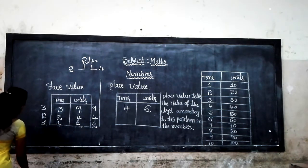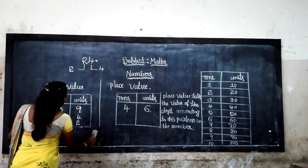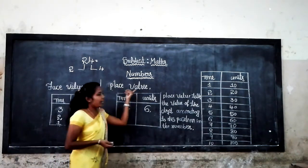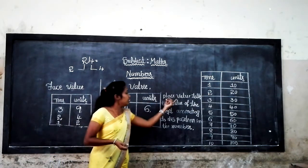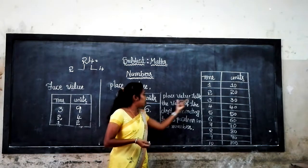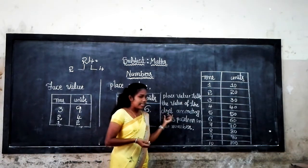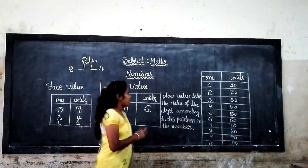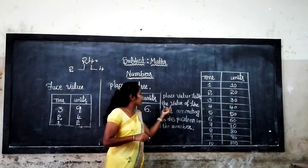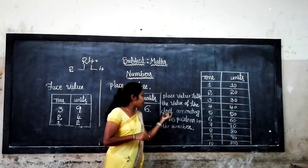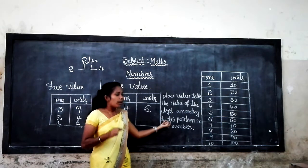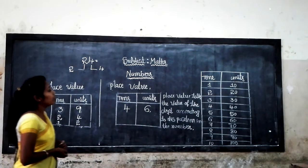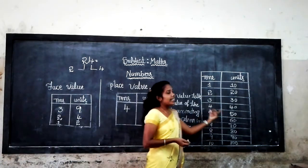Now let's look at place value. Place value tells the value of a digit according to its position in the number. Once again: place value tells the value of the digit according to its position in the number. You have the chart of tens and units.